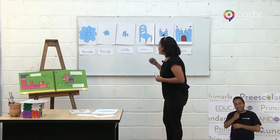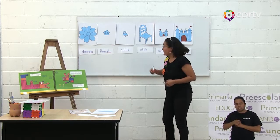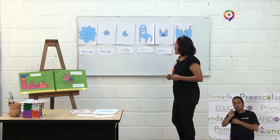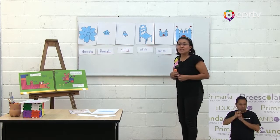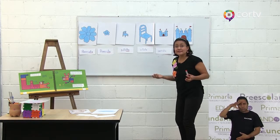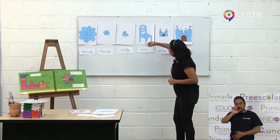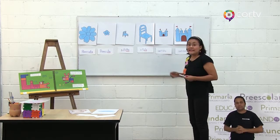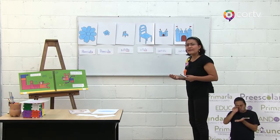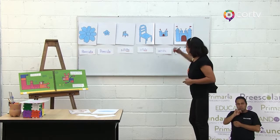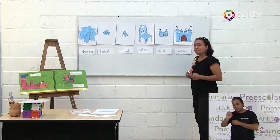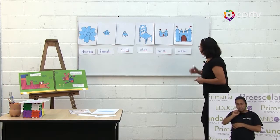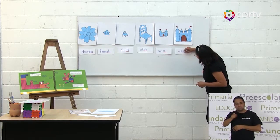Vamos a ver la terminación de sillita. Su terminación es ota. Y la terminación de sillota, ¿cuál es? Muy bien, es ota. Castillito, ¿cuál es la terminación de la palabra castillito? Ito. Excelente. ¿Y de castillote? Muy bien. Ote.